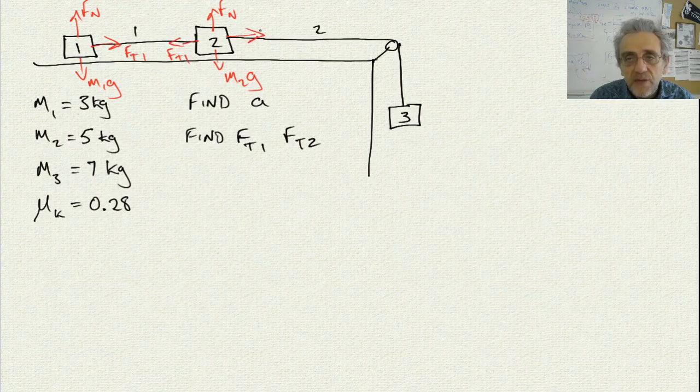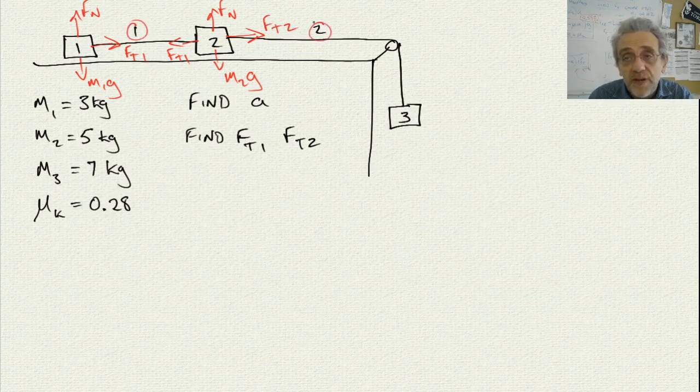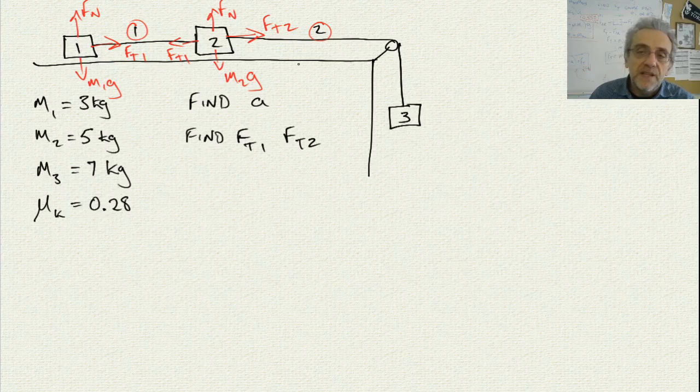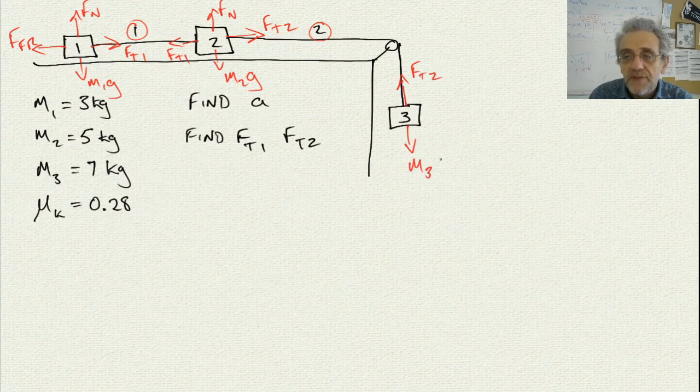Then this way we have Ft2. Notice I have denoted, because there's two separate ropes, I have denoted this as rope number one, this as rope number two. Perhaps, I forgot to mention, perhaps this would be a good time to pause the video and see if you can calculate the answer and then unpause the video and see if you get the same answer that I do. So here we have Ft2, and here we have Ft2, and here we have M3g.